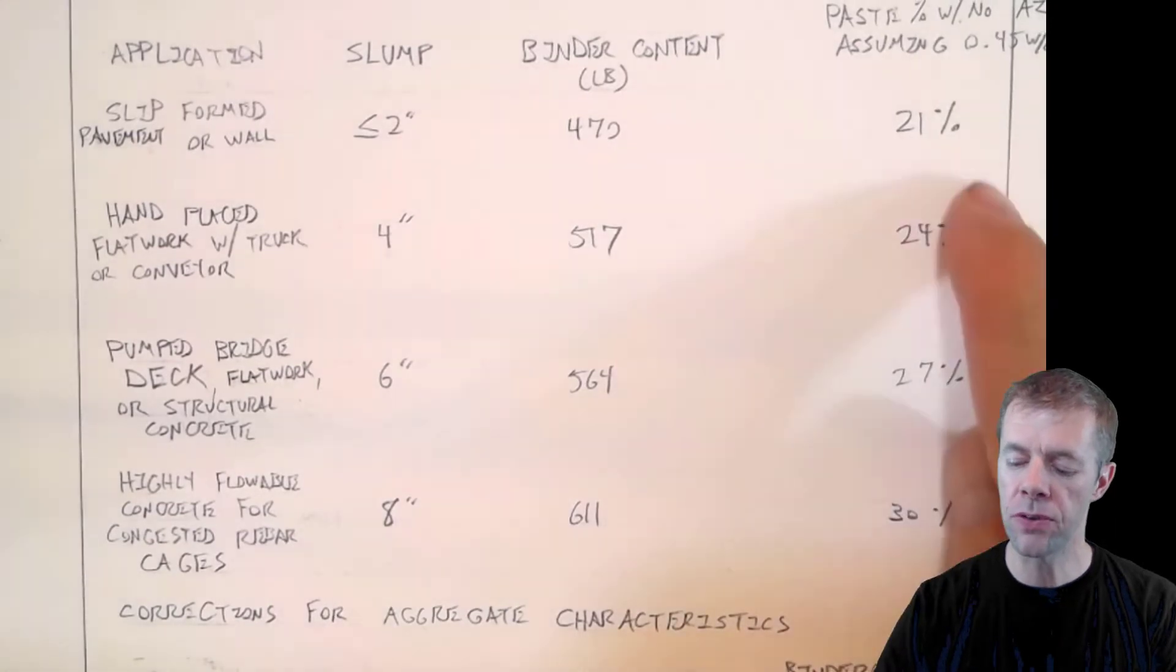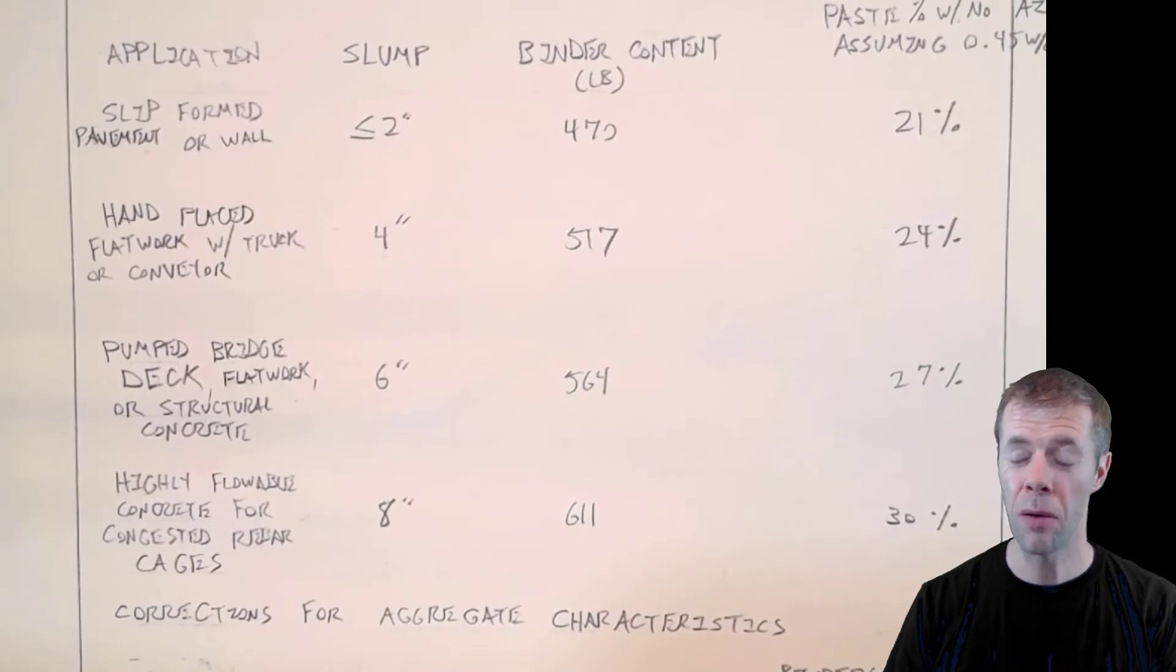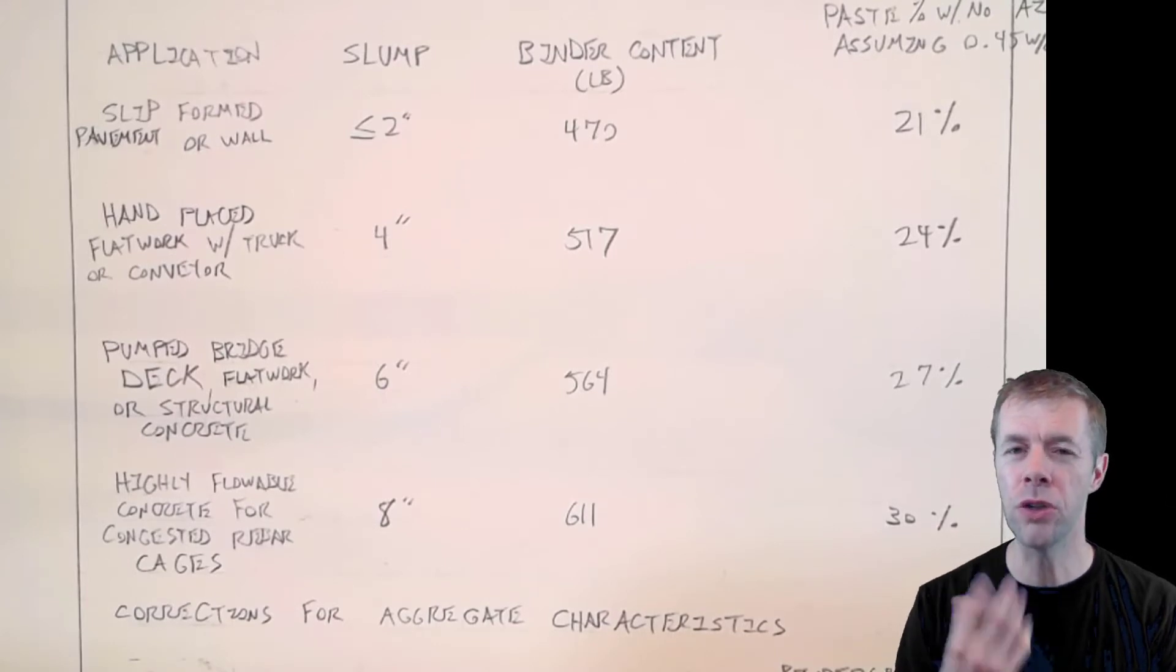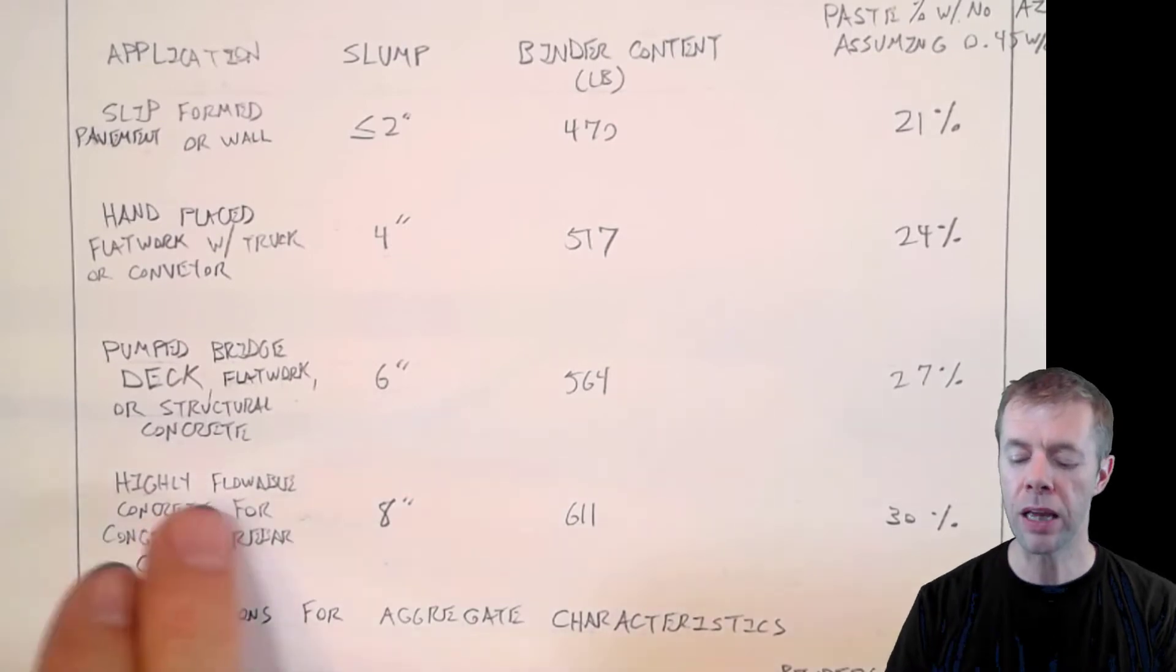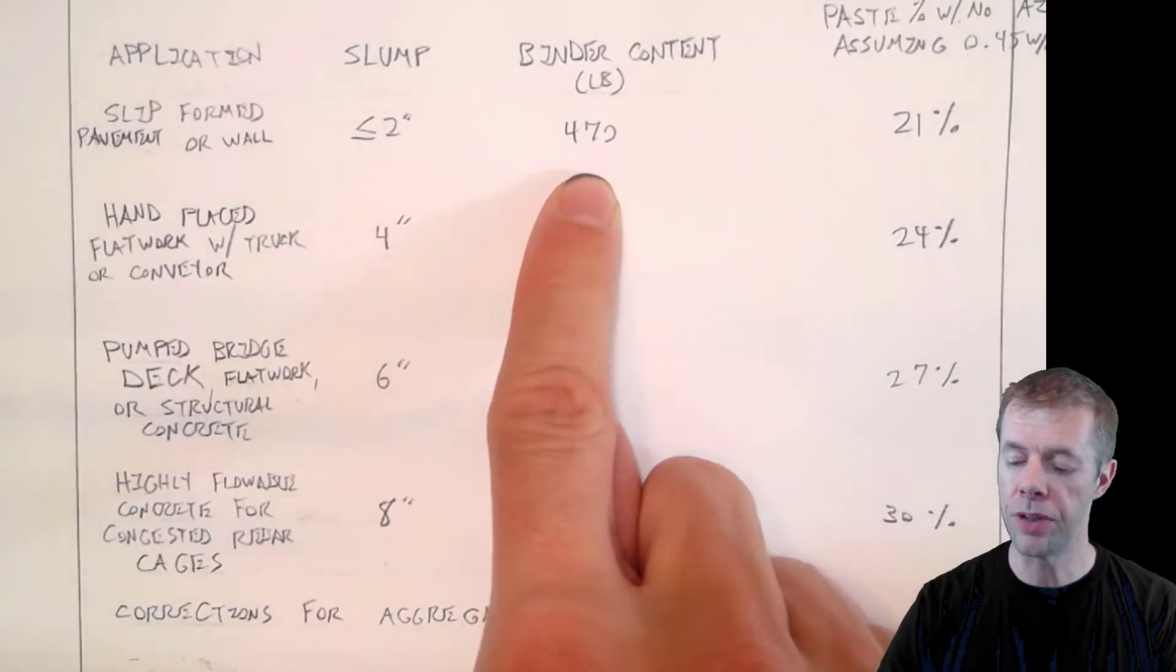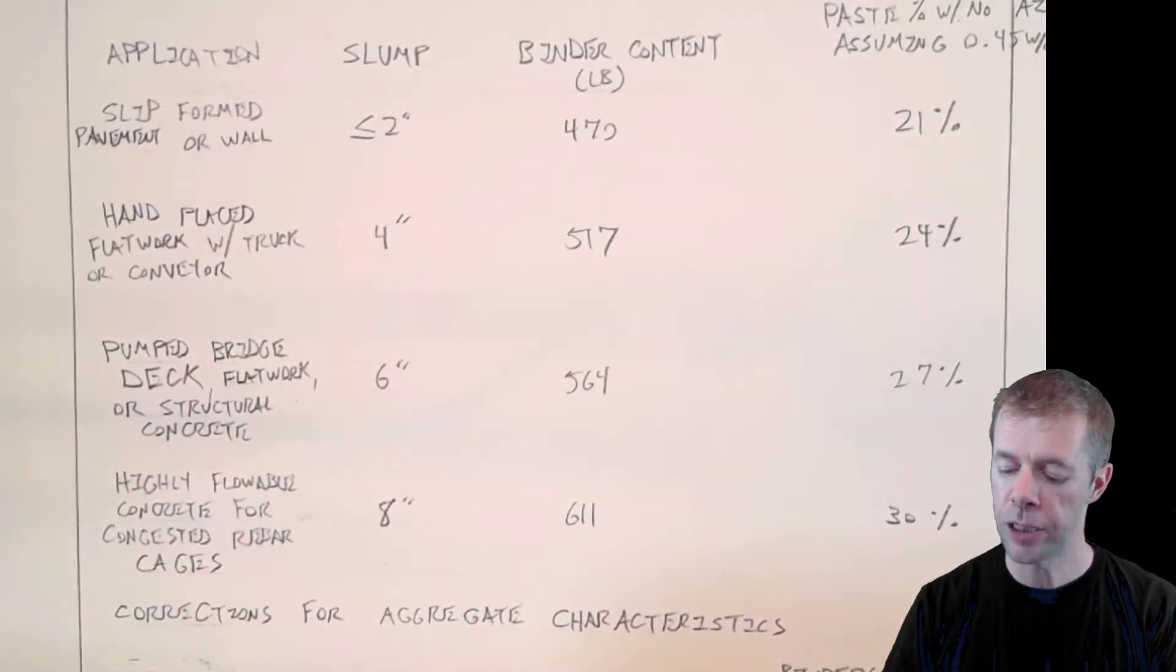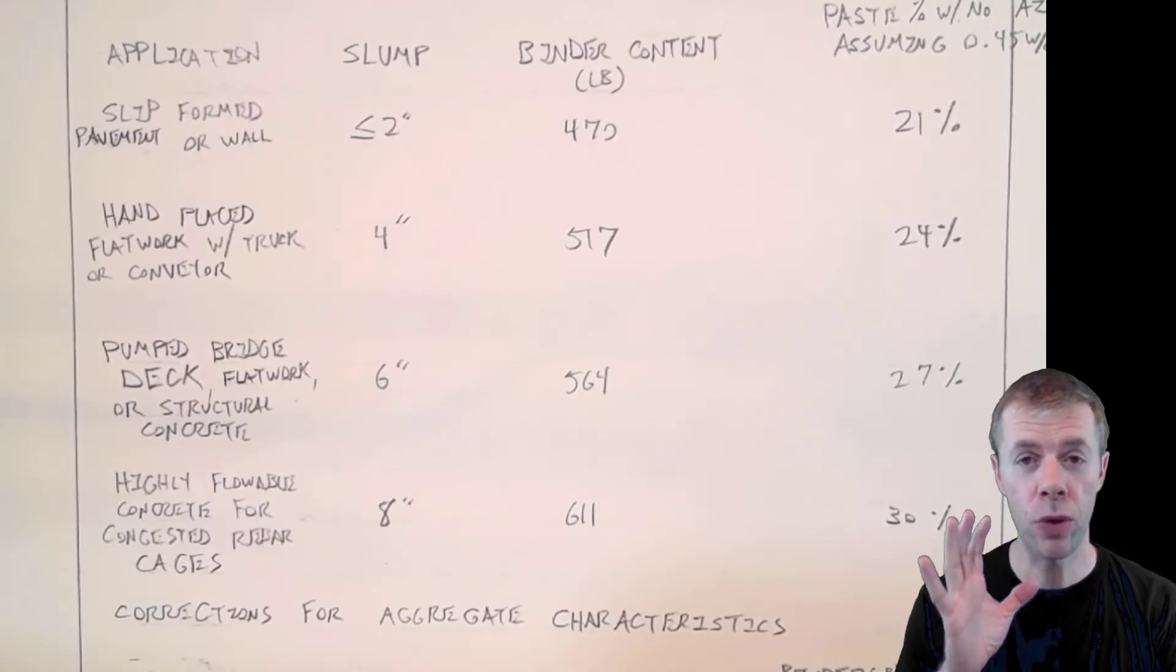This is your binder content. This is what you're picking. This is your first input into the model. Another way to think about this is this is the approximate paste content in the mixture, assuming that air is not part of the paste and also assuming you're using a 0.45 water-to-cement ratio. Now depending on what you're used to thinking about, what you're used to doing, you should pick one of these columns to help you. But the goal here is that you're either going to pick a binder content or you're going to pick some kind of paste percentage for the mixture.